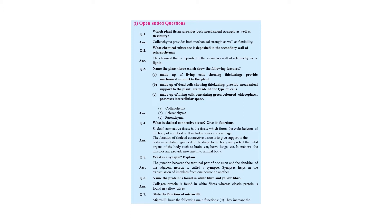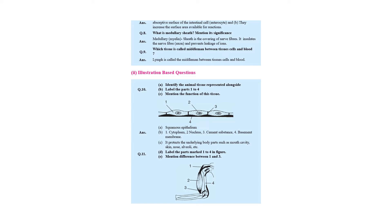Microvilli increase the absorbing surface area of the intestine. The medullary sheath is present in the neuron. The axon is formed of two layers: the outer neurilemma and the inner myelin sheath. The medullary sheath covers the nerve fibers and insulates the nerve fiber, preventing leakage of ions.